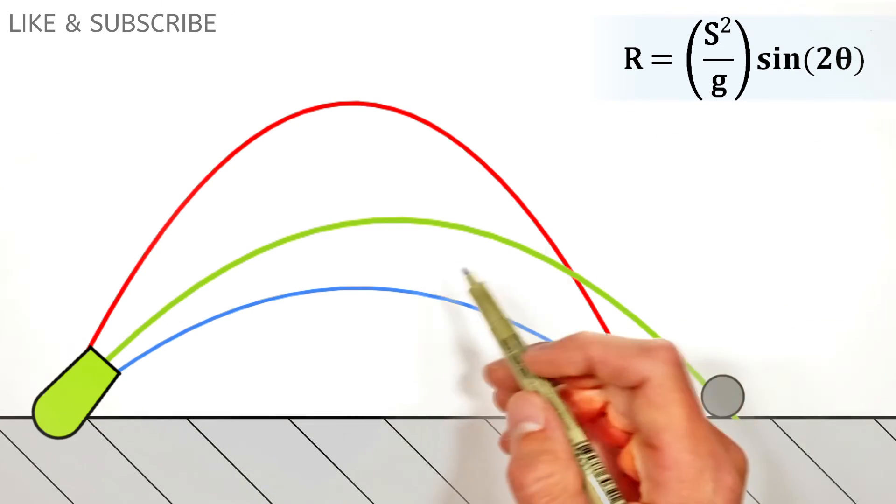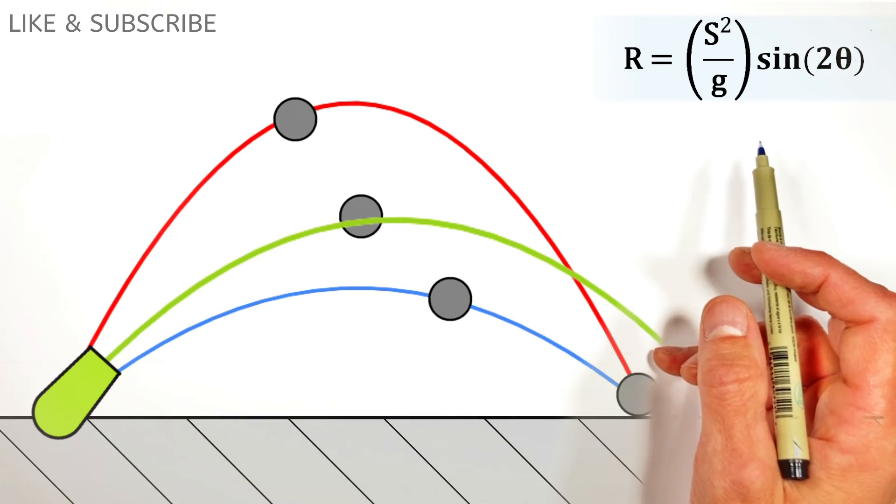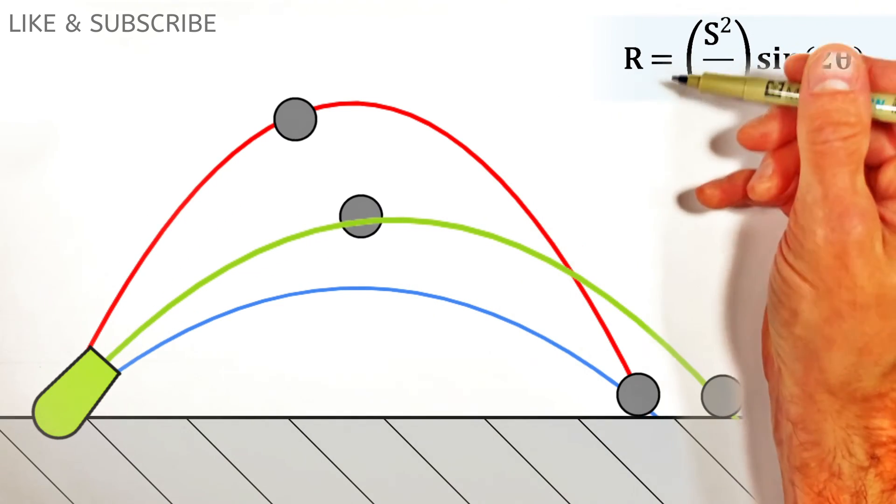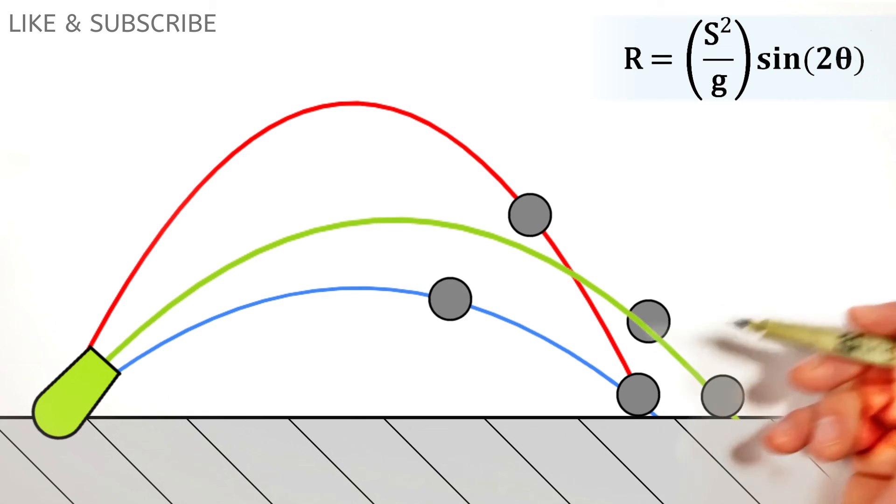But even with those limitations, this range equation is pretty useful. Now, if you want to see this derived, I've actually done that in the past. But I hope you found this useful. And on that note, that's all for now.